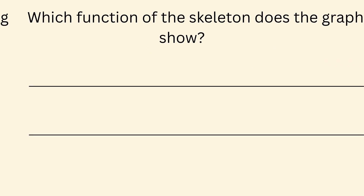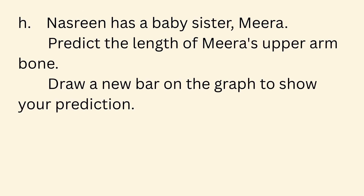G. Which function of the skeleton does the graph show? Skeletons help us grow. H. Nasrin has a baby sister, Mira. Predict the length of Mira's upper arm bone. Draw a new bar on the graph to show your prediction. We should add a bar that is shorter or lower than the bar for Ackman's arm bone length. For example, maybe 8cm, 6cm, or 7cm.